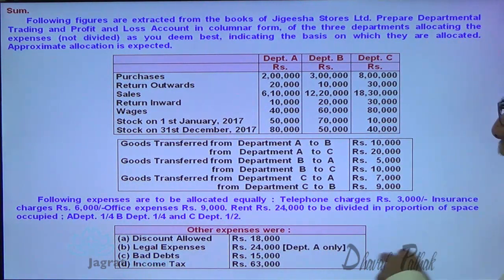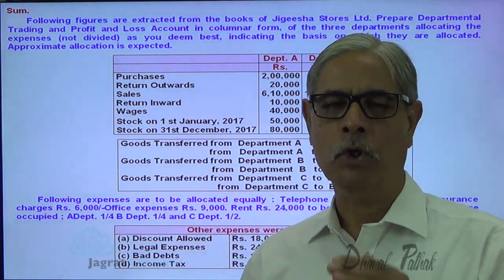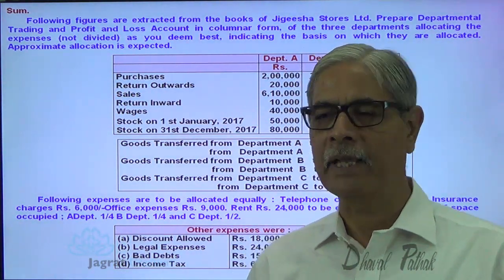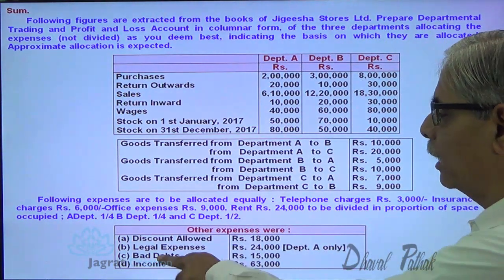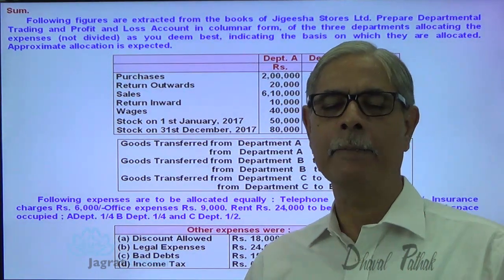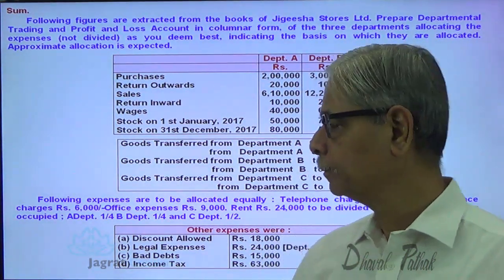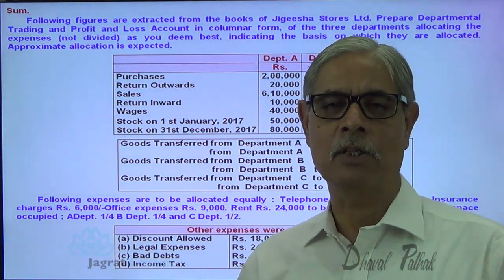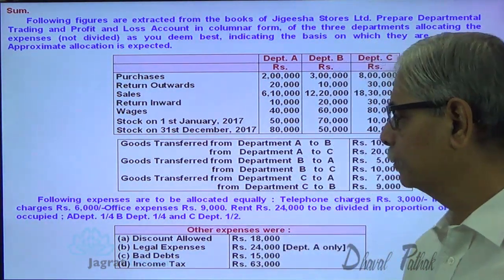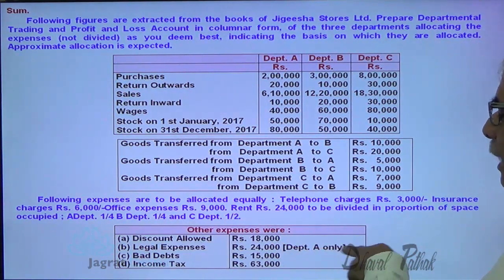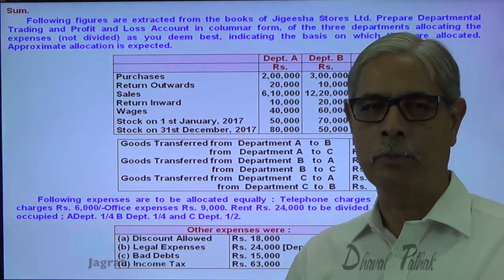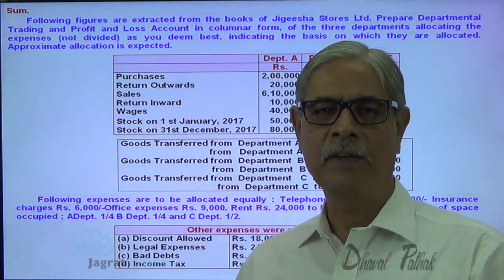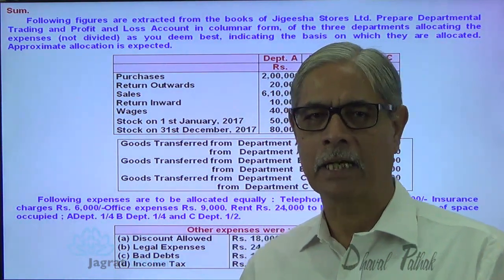Rent of 24,000 is to be divided in proportion of the space occupied, so rent will be distributed between three departments in the proportion of the area occupied. Discount allowed and bad debts will be distributed amongst the three departments in the proportion of their sales. Income tax will be distributed between the three departments on the basis of net profit. Legal expenses are specifically for a department, so no need to distribute them. This is how you are given the information to prepare the trading and profit and loss account.